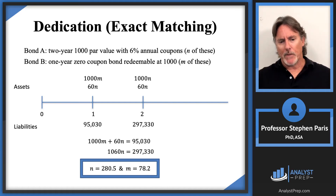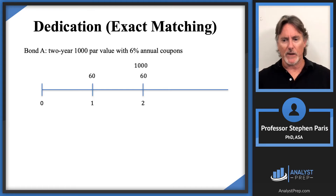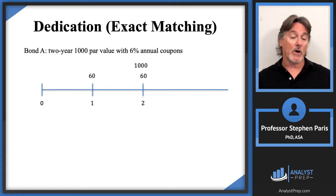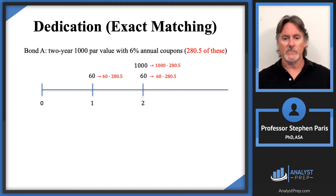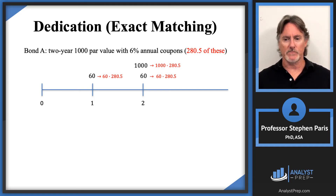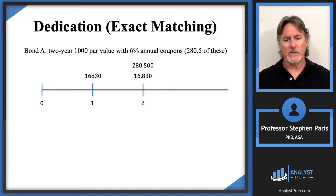I want to make another observation about Bond A. It's a two-year bond with $1,000 par value and 6% annual coupons — redeemable at par. Buying 280.5 of these gives total coupons of 280.5 × 60 = $16,830 at each coupon date, and a total redemption value of 280.5 × 1,000 = $280,500.